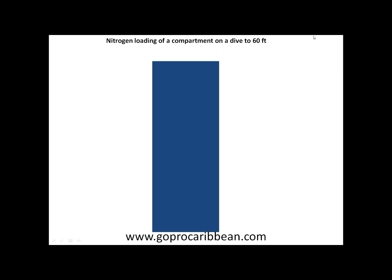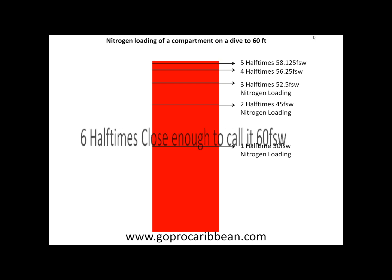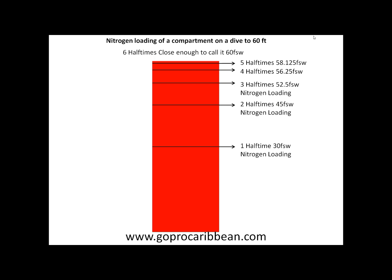Let's imagine ourselves on a dive to 60 feet and watch the nitrogen dissolving into our body. In the first half-time, we absorb half the amount of nitrogen — 30 feet of seawater. In the second half-time, half again — so we would have 45 feet of seawater. After the third half-time, half again — 52.5 feet of seawater. After the fourth half-time, 56.25 feet of seawater. After the fifth half-time, 58.125 feet of seawater. And after six half-times, we would be close enough to call it equilibrium — 60 feet of seawater of nitrogen dissolved in our body.